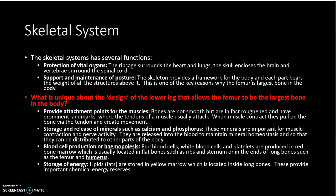Our skeletal system has several functions. First is the protection of vital organs. We can think about the rib cage surrounding the heart and lungs, the skull enclosing the brain, even the pelvis protecting the reproductive organs to a degree, and also the vertebrae surrounding the spinal cord. It obviously supports and maintains our posture. The larger bones tend to be found lower down in the body because they're carrying a greater amount of load, so they need to be bigger and stronger. We would expect our inferior lumbar vertebrae to be much bigger than our superior cervical vertebrae, for example.